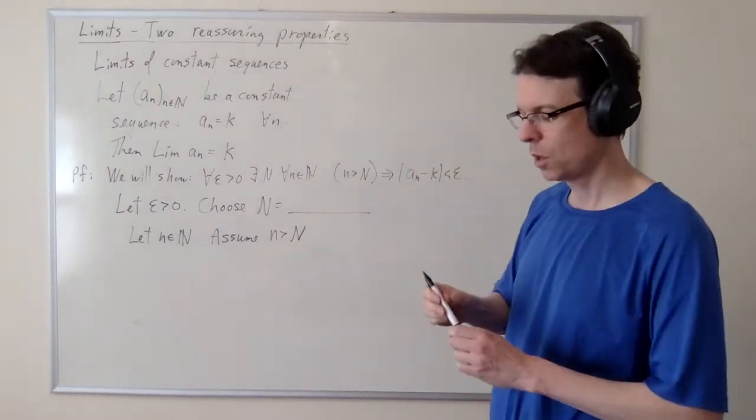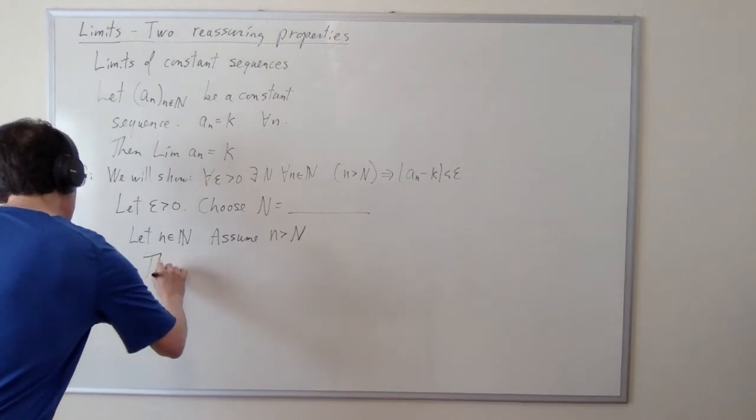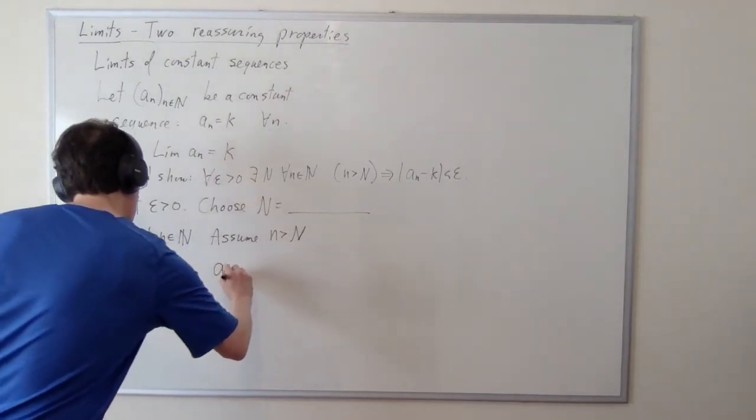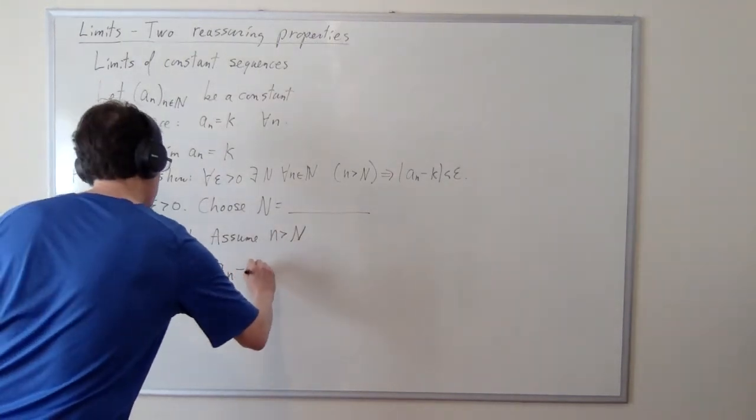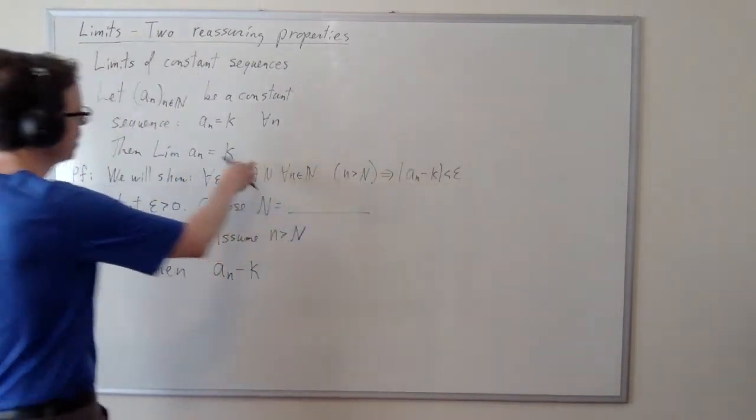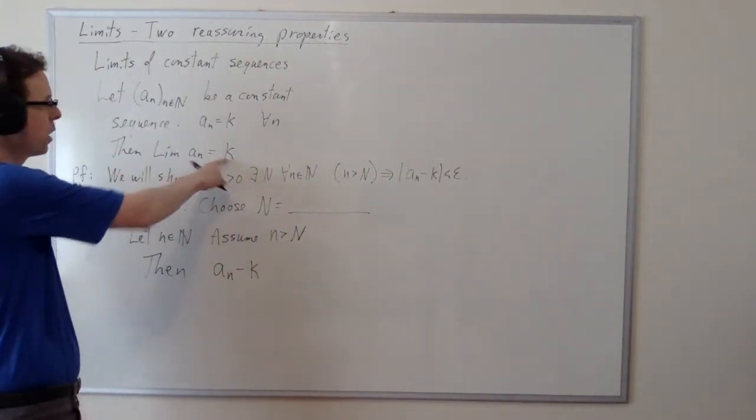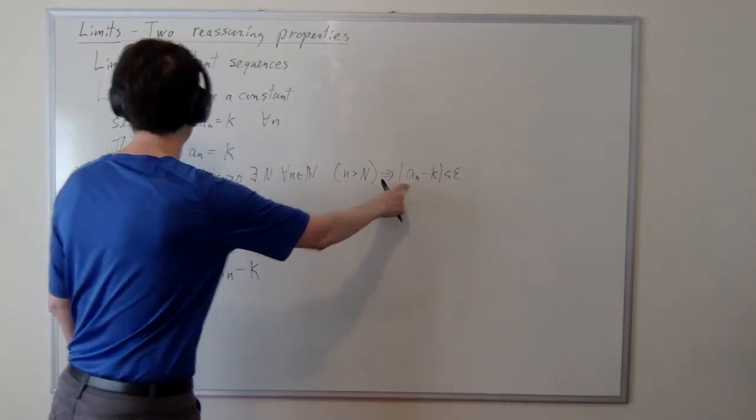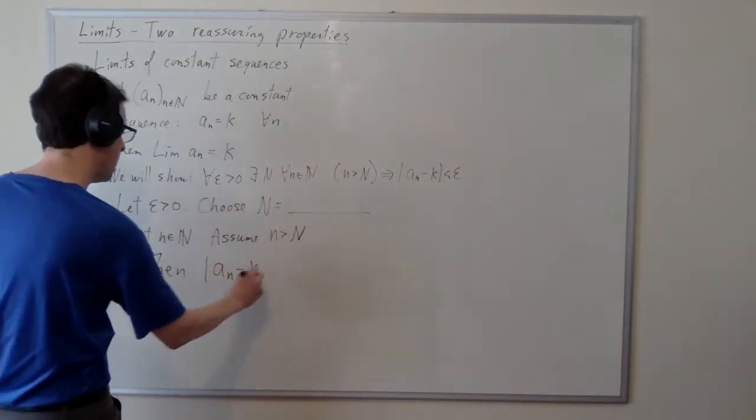We've assumed this. We need to prove this. So then, so what do we need to prove? |a_n - k|, right? Why does this say k? Because that's the supposed limit, right? I'm supposed to put the supposed limit here and the sequence terms here. So |a_n - k|, absolute.